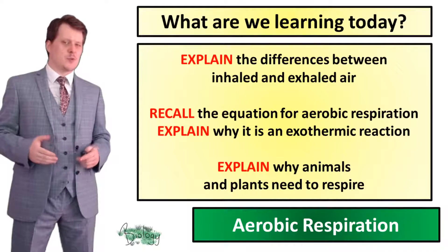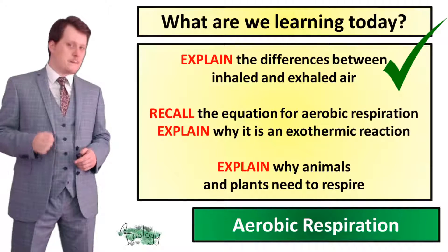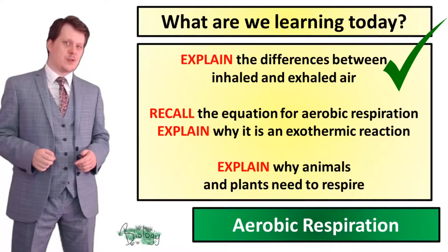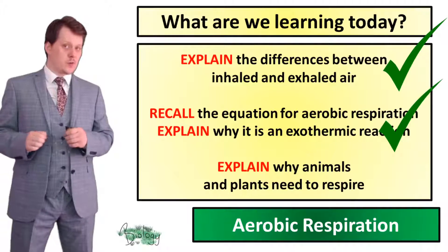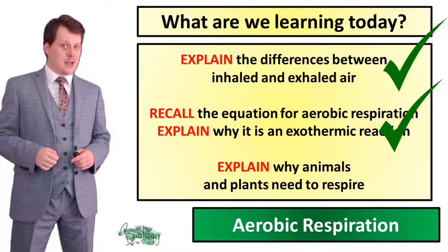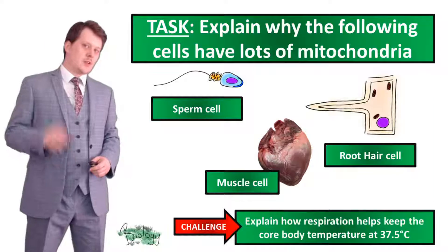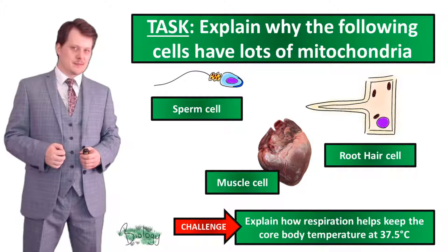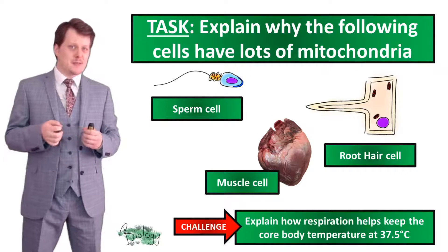So now we've explained the differences between inhaled and exhaled air, which is important for aerobic respiration because we're reacting glucose and oxygen. We can also recall the equation for aerobic respiration: glucose plus oxygen gives you carbon dioxide and water. We've explained why it is an exothermic reaction — because it releases energy into its surroundings. We recalled in our starter that aerobic respiration occurs in the mitochondria.